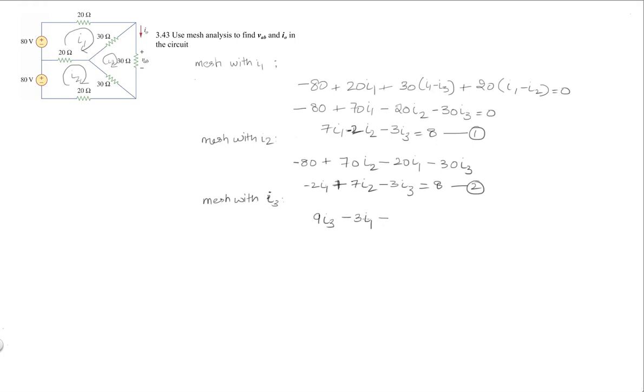So that's minus 30I1 minus 30I2 equals 0, or I1 plus I2 minus 3I3 equals 0. So these are my three equations.